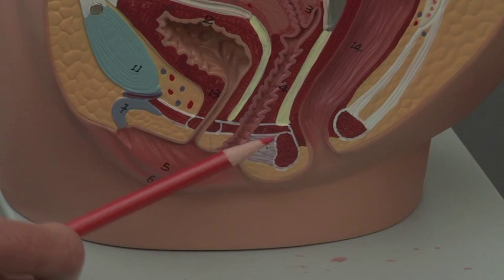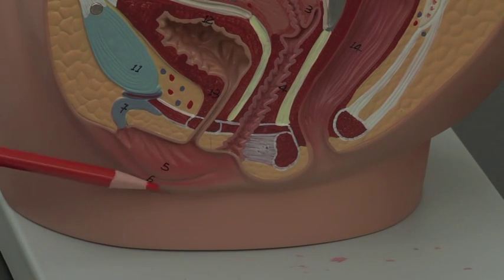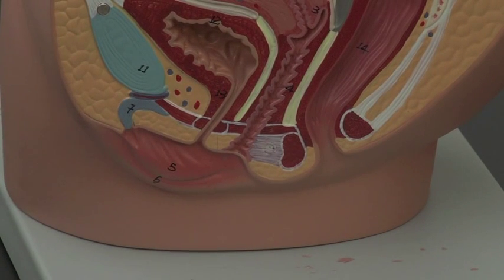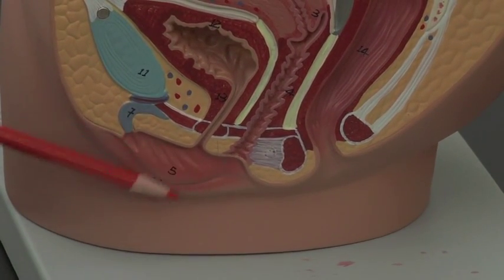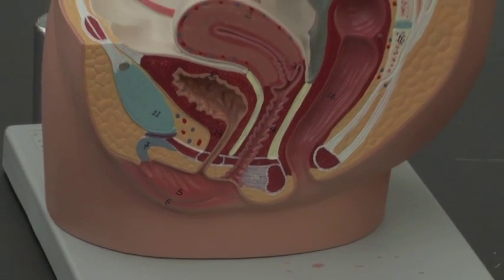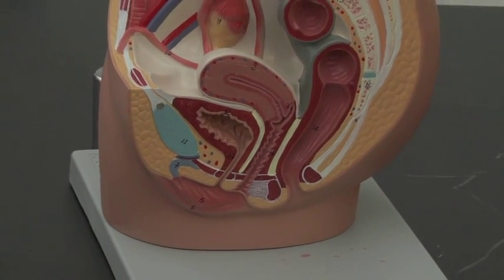If you put the labia minora and labia majora together, you refer to those as the vulva. So these external flaps are called the vulva, and I think that's everything on there.